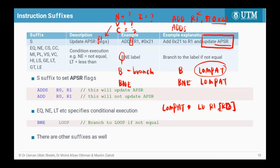To summarize suffix usage: ADDS R0, R1 adds R1 to R0, stores the result in R0, and updates the APSR. ADD without the S performs the same addition but does not update the status register flags. For conditional branch suffixes, execution branches to the target location if the condition is met; if not met, the next instruction is executed instead.